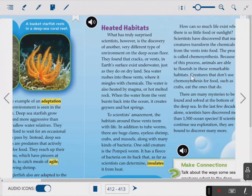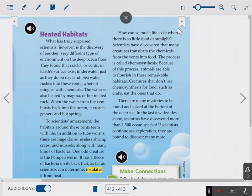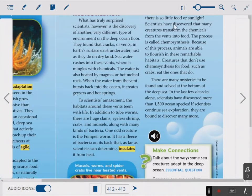How can so much life exist when there is so little food or sunlight? Scientists have discovered that many creatures transform the chemicals from the vents into food. The process is called chemosynthesis. Because of this process, animals are able to flourish in these remarkable habitats. Creatures that don't use chemosynthesis for food, such as crabs, eat the ones that do. There are many mysteries to be found and solved at the bottom of the deep sea. In the last few decades alone, scientists have discovered more than 1,500 ocean species. If scientists continue sea exploration, they are bound to discover many more.